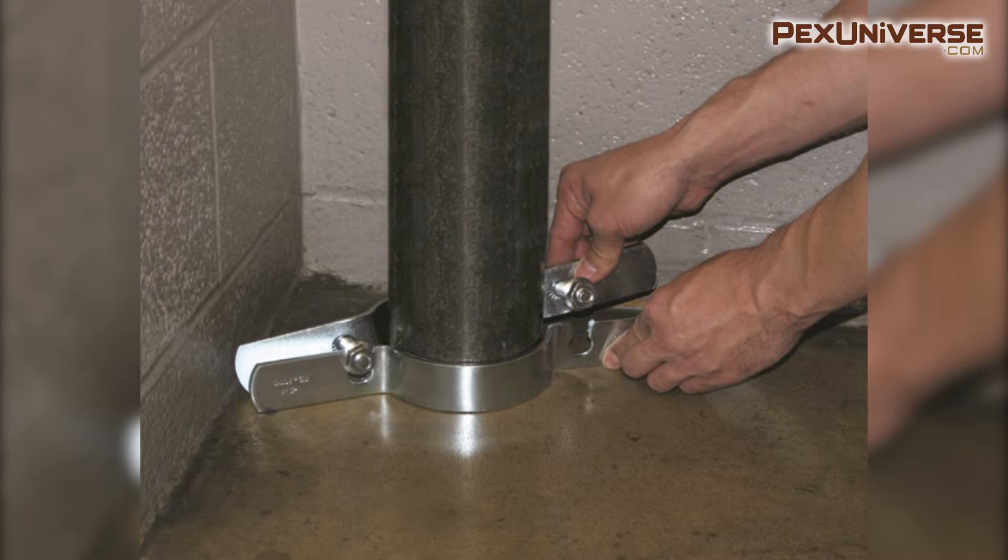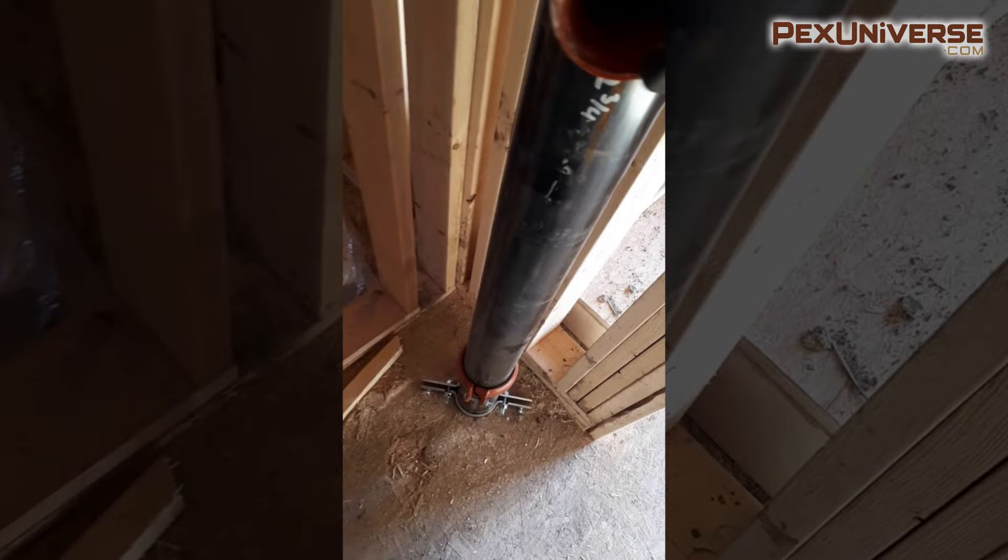Once secured over the pipe, wide flanges of the clamp distribute the load to the flooring around the opening and prevent the pipe from sliding down.